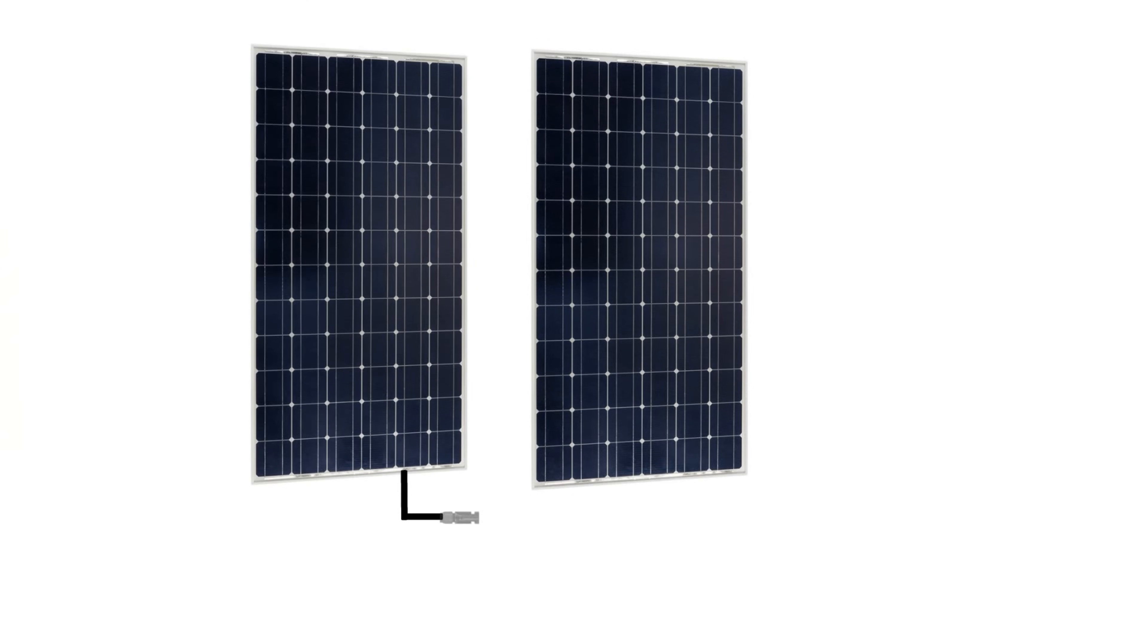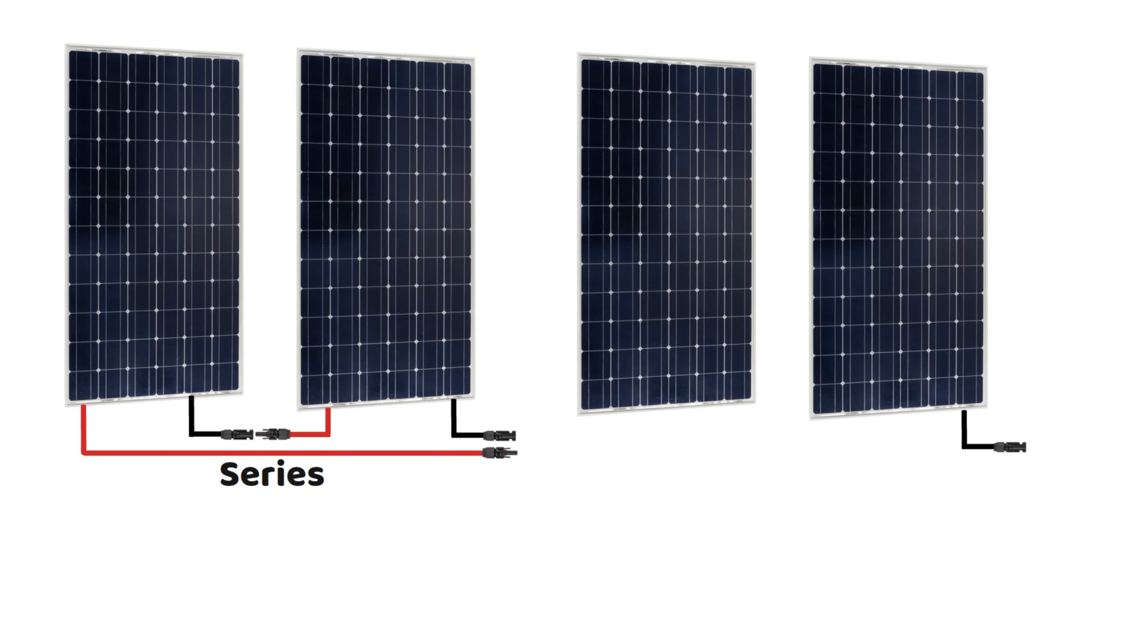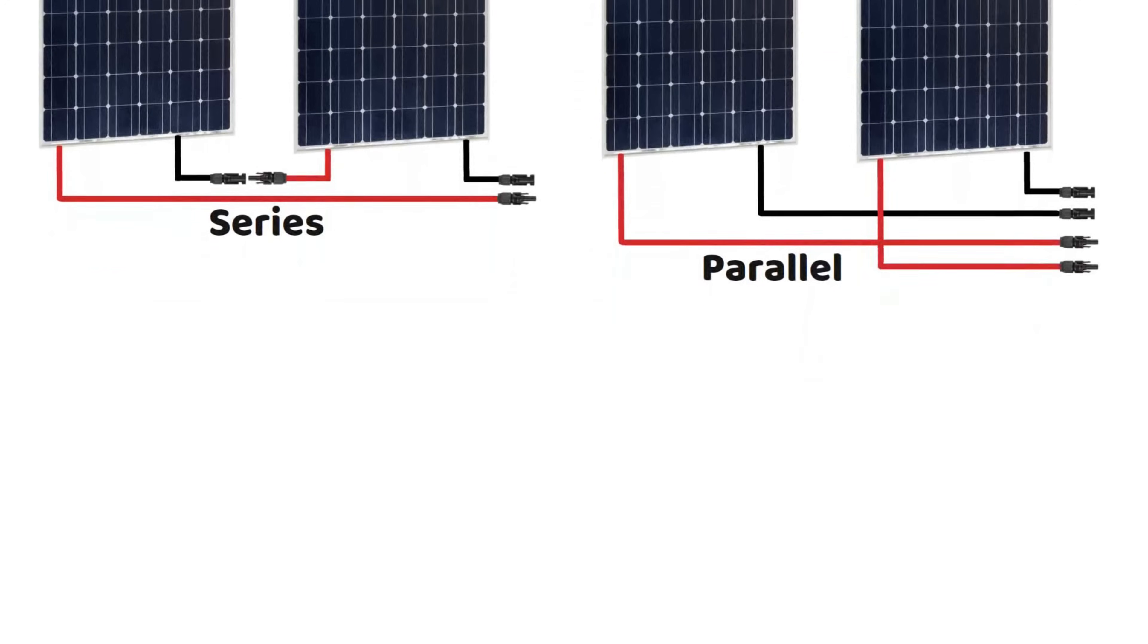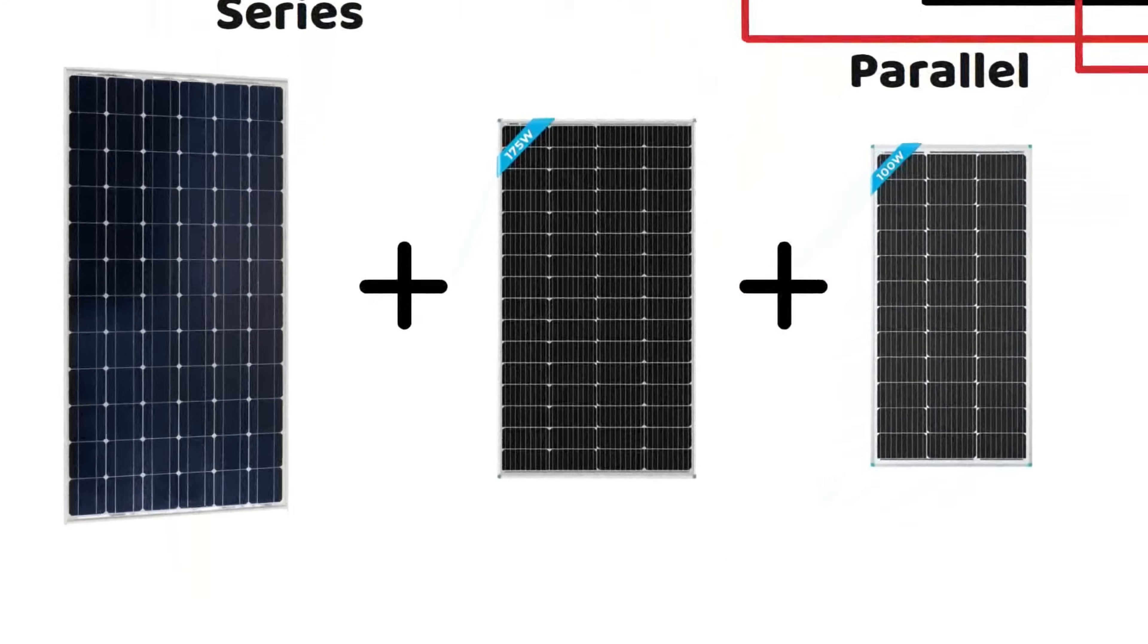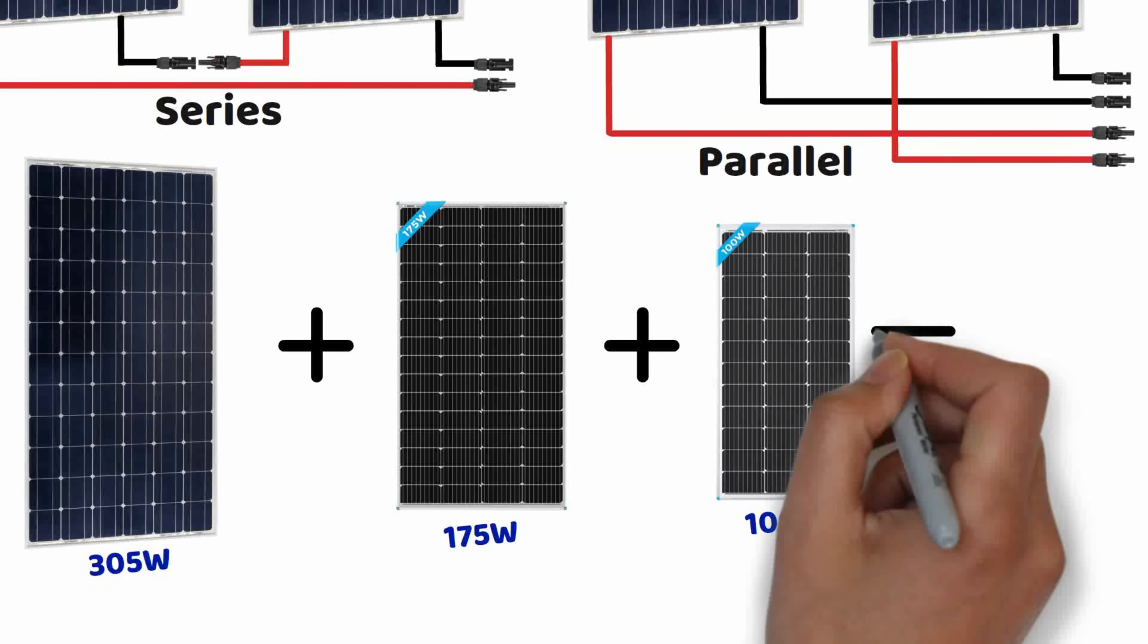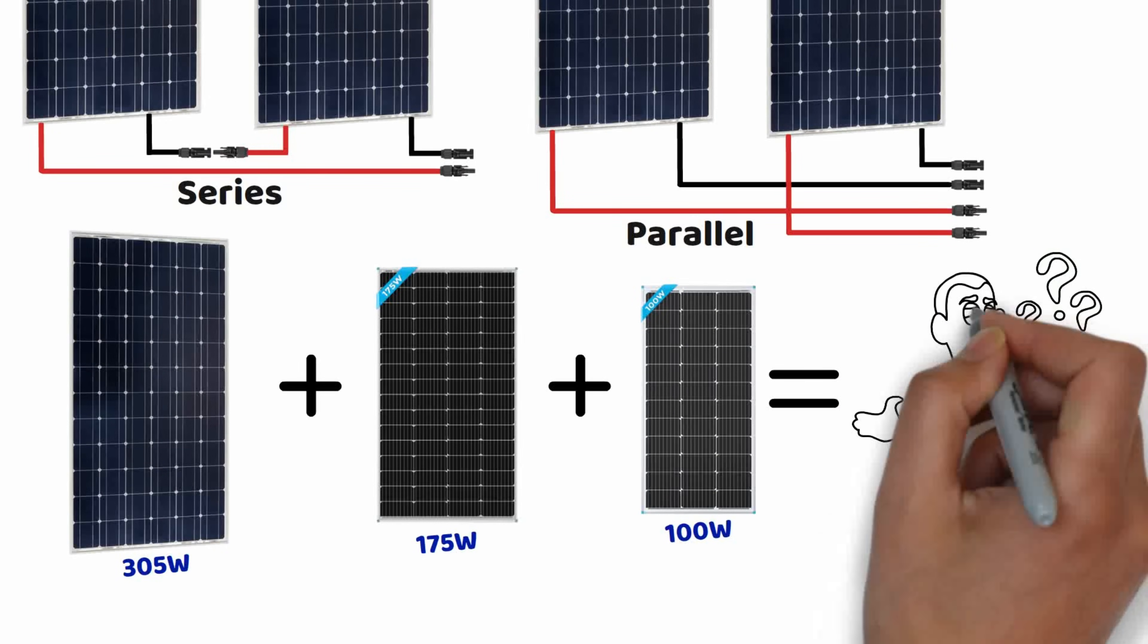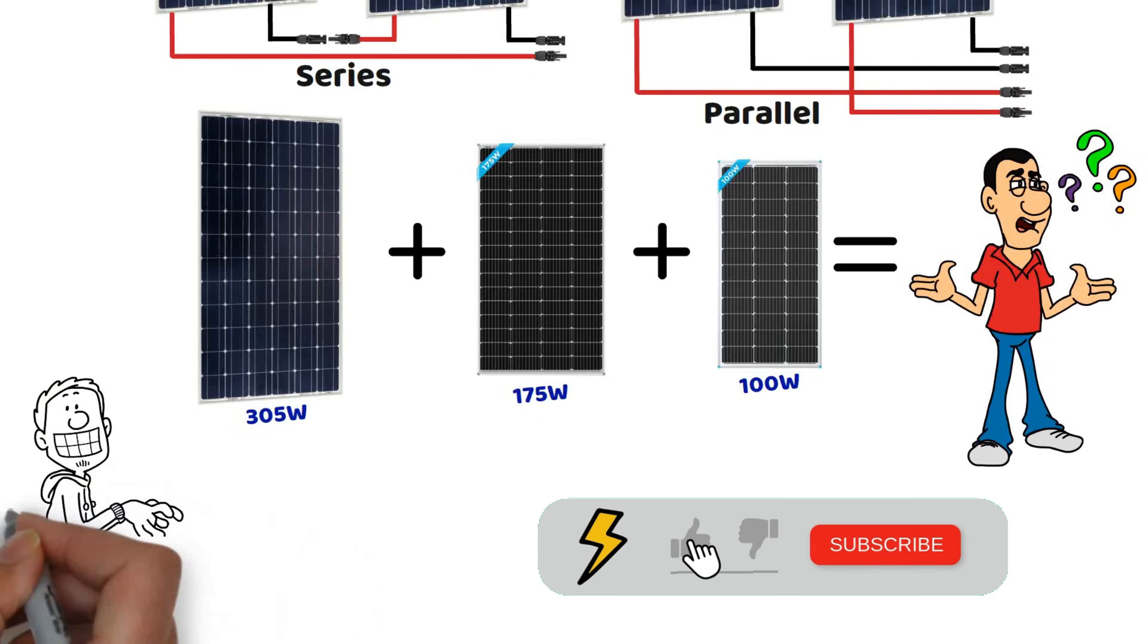We saw in a previous video how to connect solar panels in series or in parallel, along with the advantages and disadvantages of these two connection methods. However, all these explanations were based on identical panels. In practice, you may often find yourself connecting solar panels with different characteristics, whether it's voltage, current, power, or even the brand. Connecting different panels together is not without consequences. So today, we'll examine various examples to understand how to connect them properly to minimize performance losses and wiring errors. But before we begin, don't forget to subscribe to the channel, give it a thumbs up, and feel free to ask your questions in the comments.